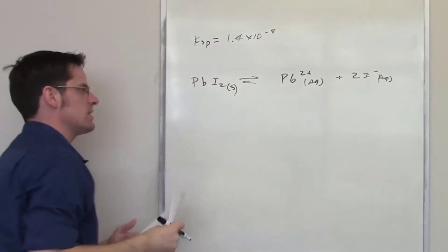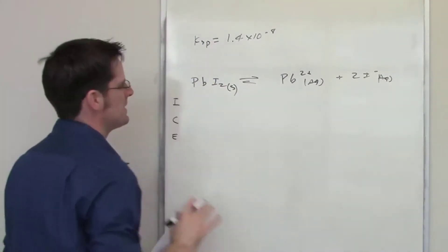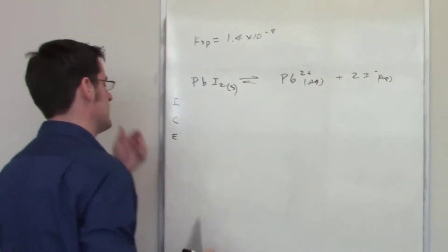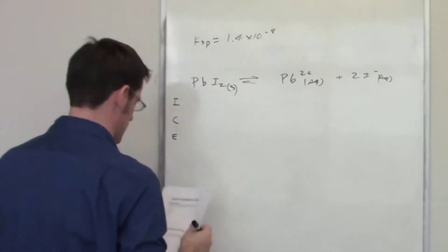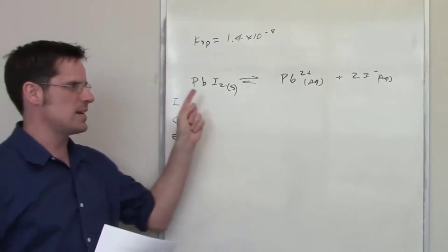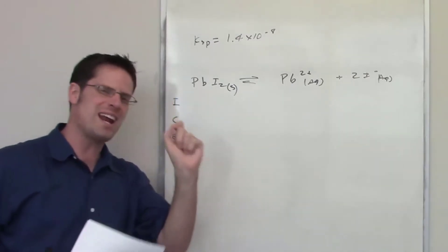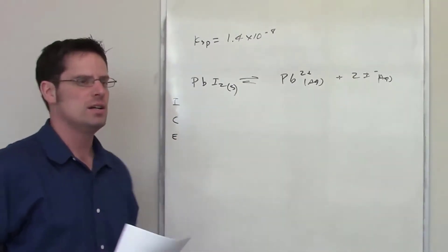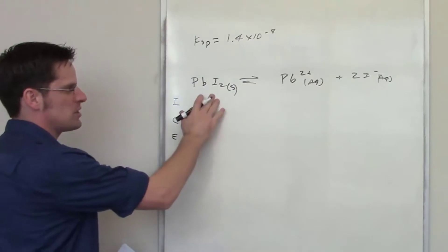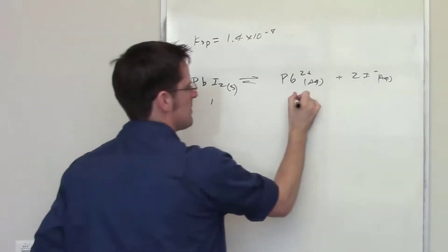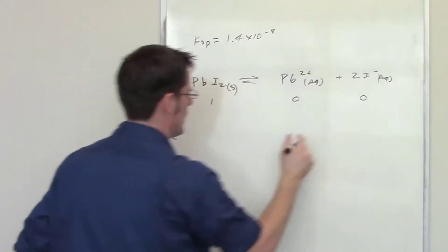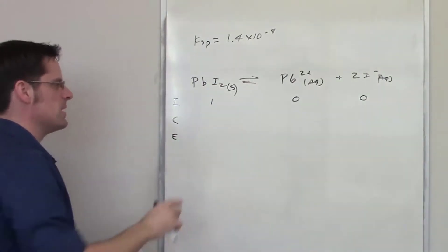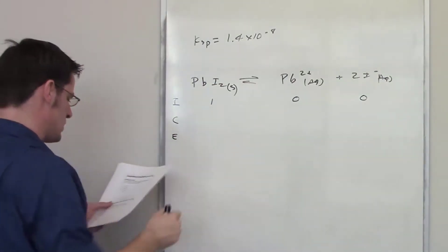To do this I'm going to set up an ICE table. This follows from analogous examples I've already given in separate videos. Right at the very beginning, when I throw lead iodide into water, it's 100% solid, and the ion amounts are zero. Gradually that will go back and forth until it hits equilibrium, changing by some amount.